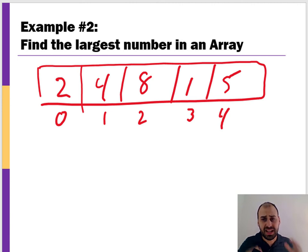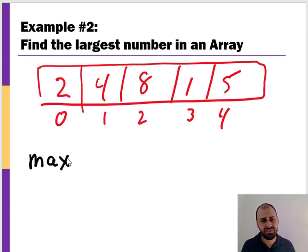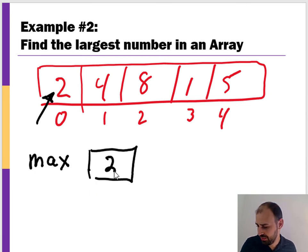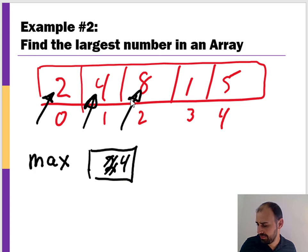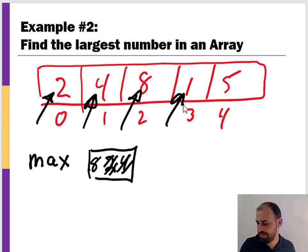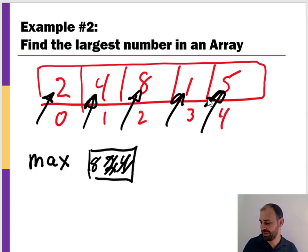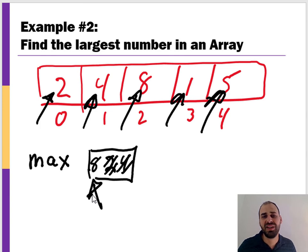To find the largest number, keep track of a maximum variable. Initialize it to the first element — say, two. Then walk to the next element: is four bigger than two? Yes, so four becomes the new maximum. Is eight bigger than four? Yes, so eight is now the maximum. Is one bigger than eight? No. Is five bigger than eight? No. When we reach the end of the array, eight is confirmed as the largest number. The same idea applies in reverse for finding the minimum.